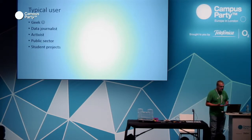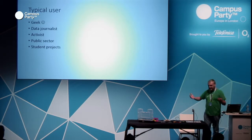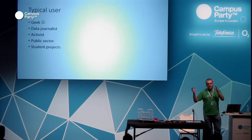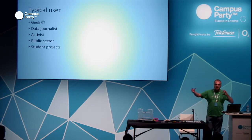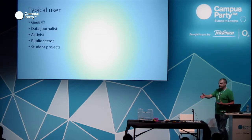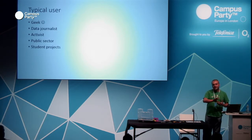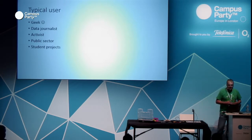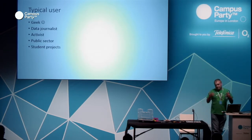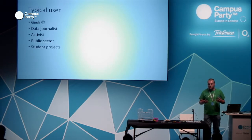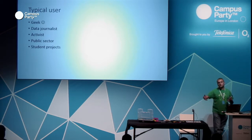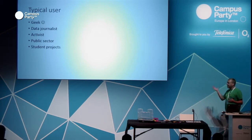The typical users are of course geeks and data journalists like me. Data journalism is a special kind of journalism where people dig data from different sources and put it together to make a story. You'll see one device I developed for a Czech journalist to measure the quality of highways in Czech Republic. Of course activists — we have many in Czech Republic who pressure the public sector and government to improve the living environment, for example reducing speed in city centres to reduce noise.